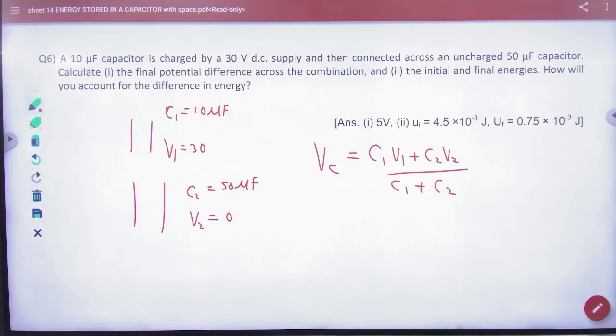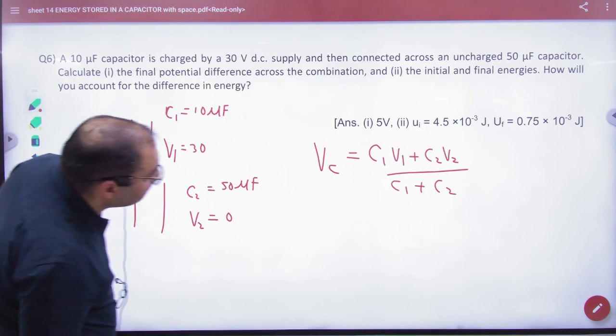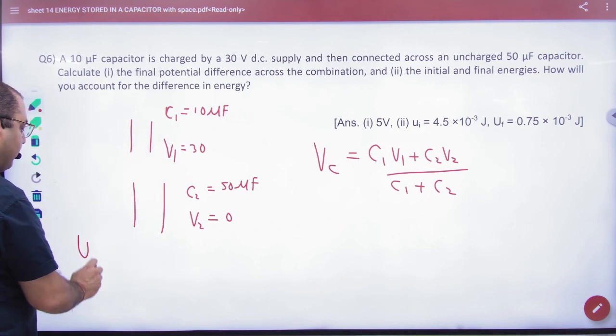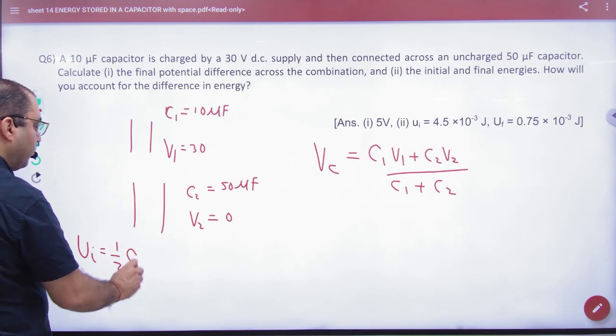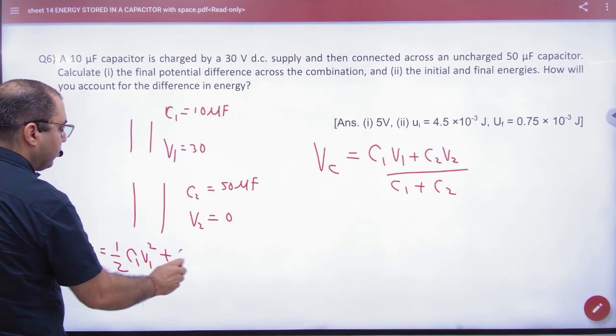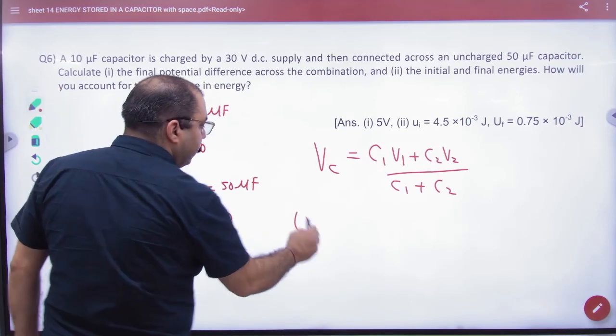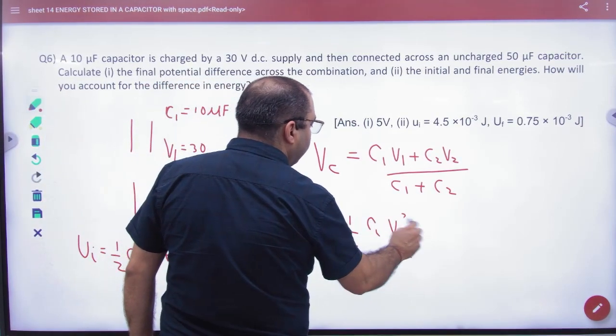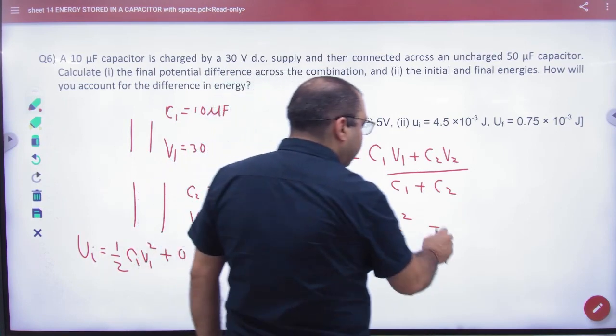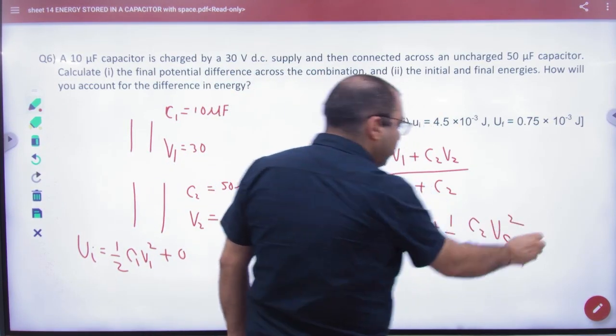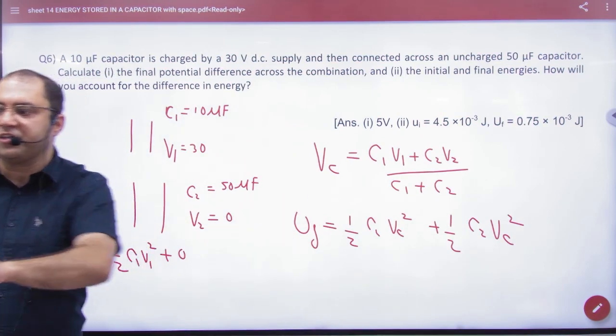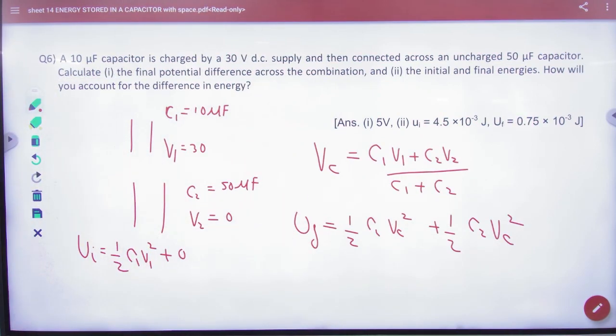Next, we will take out initial and final energies. So initial energy will be ½C1V1 squared. Final energy will be ½C1 into common potential squared plus ½C2 into common potential squared. Solve initial and final energies, we'll get the points.